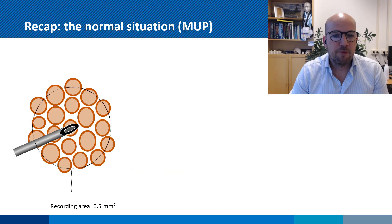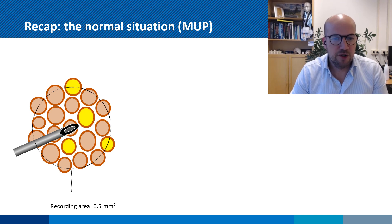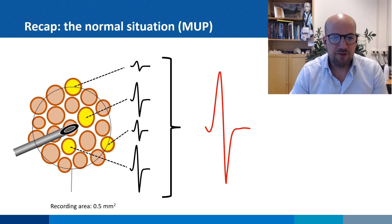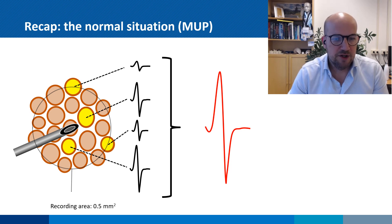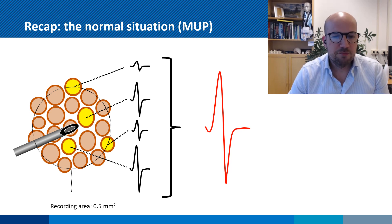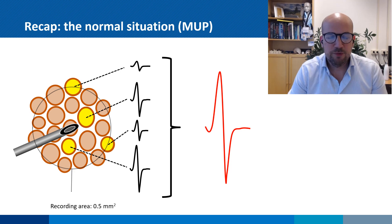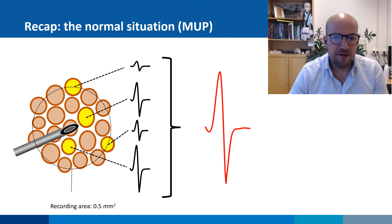Just as a short recap of the normal situation: when we stick a needle inside a muscle, we generally do that to measure multi-unit action potentials, which have a shape as you can see here on this screen. Besides multi-unit action potentials, we do not expect any other activity to be present.